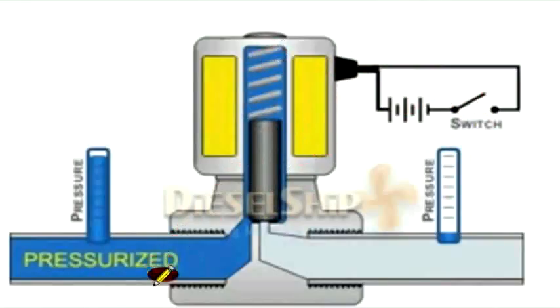This pulls the coil up, allowing the flow of fluid from upstream to downstream. Now the coil is getting energized and the switch is closed. The electromagnetic coils are energized.